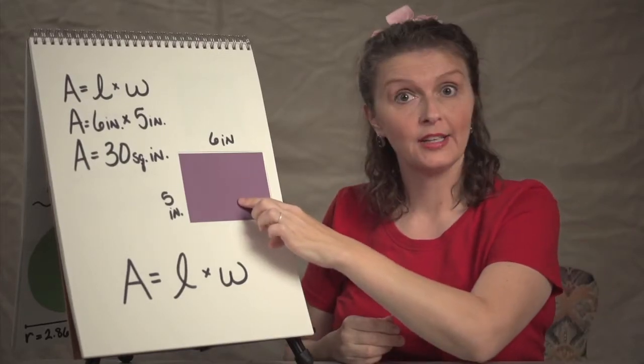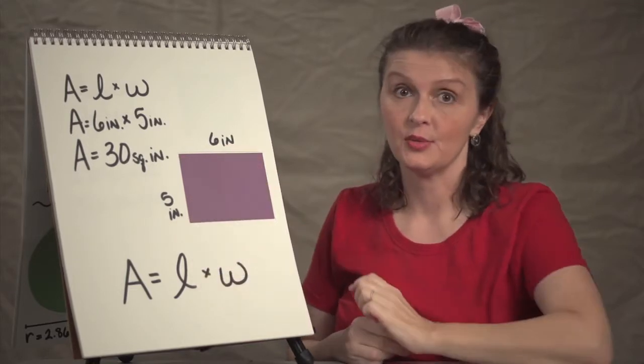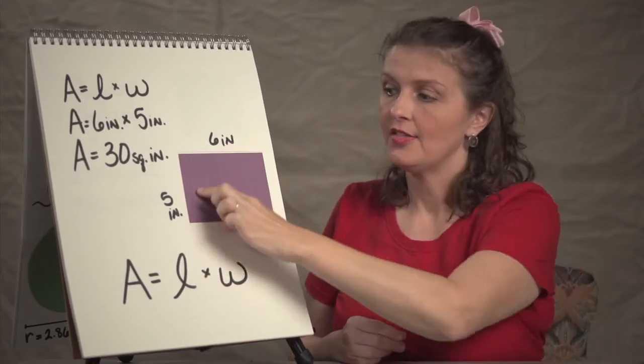This rectangle or irregular rectangle is six inches by five inches. It's irregular because these two are different. The area, the space here,